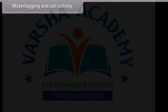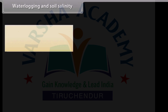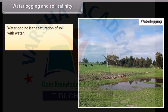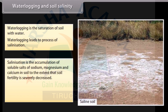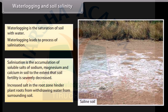Waterlogging and Soil Salinity: Waterlogging is the saturation of soil with water. Waterlogging leads to the process of salinization. Salinization is the accumulation of soluble salts of sodium, magnesium, and calcium in soil to the extent that soil fertility is severely decreased. Increased salt in the root zone hinders plant roots from drawing water from surrounding soil.